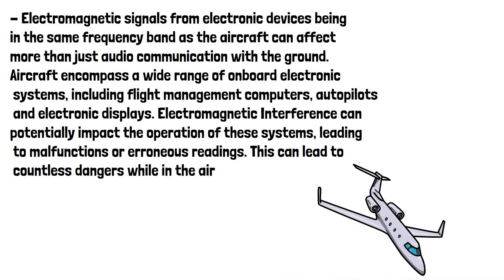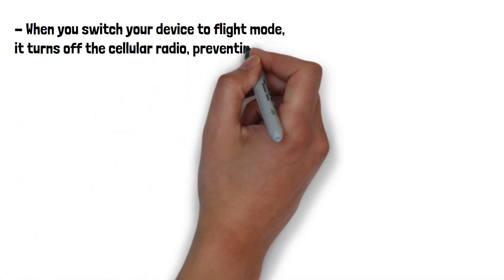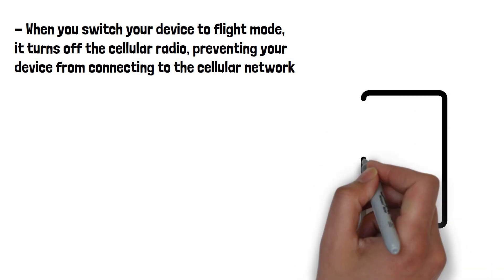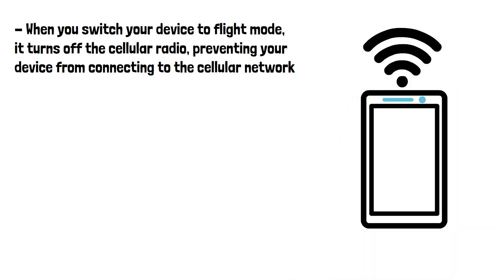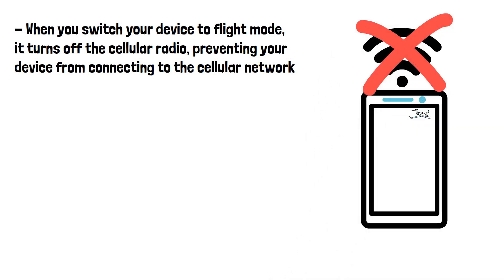When you switch your device to flight mode it turns off the cellular radio, preventing your device from connecting to the cellular network. This eliminates the possibility of your device emitting or receiving signals that can interfere with the aircraft's communication systems, and significantly reduces the electromagnetic emissions from your device. While it's fairly unlikely that one device alone could cause issues or interference, if everyone on the plane ignored this, it could cause some serious issues.